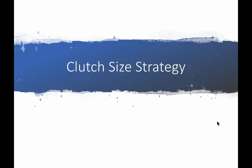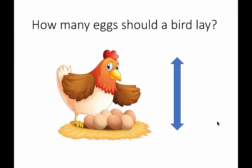Next, I want to think about clutch size strategy. Clutch size is the number of offspring an individual should produce in any given year. Most clutch size research has been done on egg-laying in birds — how many eggs should a bird lay at a given time. There are advantages to laying more eggs: more eggs means more offspring passing on genes. But there are costs too: producing eggs is very energy intensive and can affect the parent's survival, and care for each individual offspring is also extremely energy intensive. The more eggs there are, the lower the likelihood of survival of each individual.